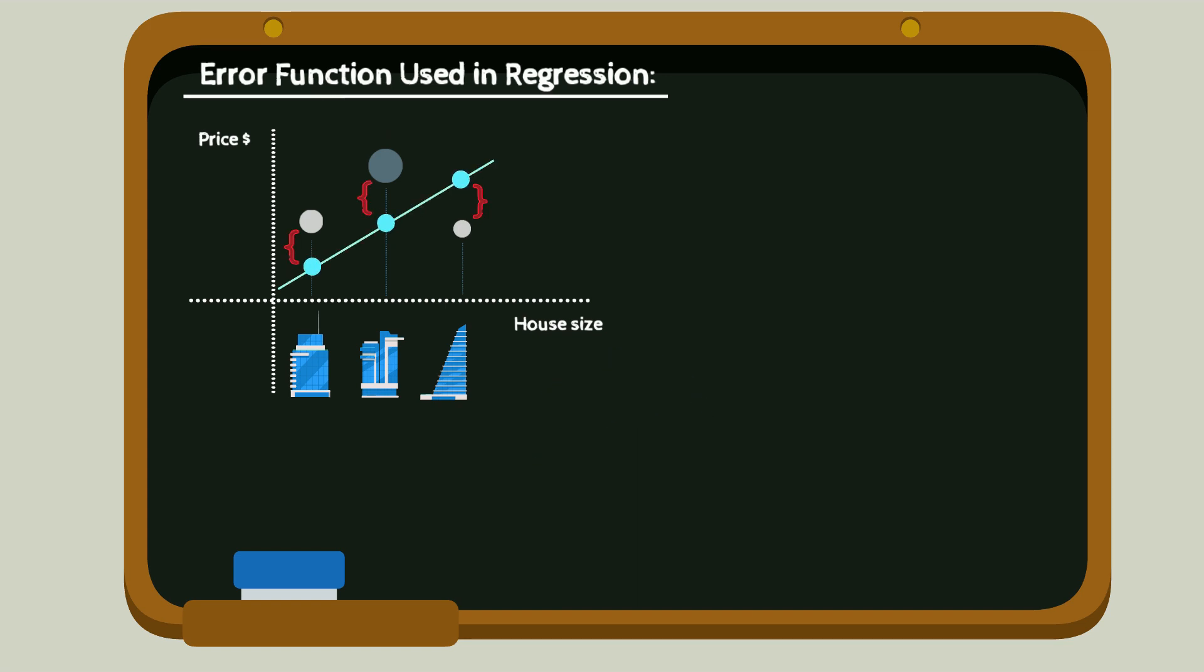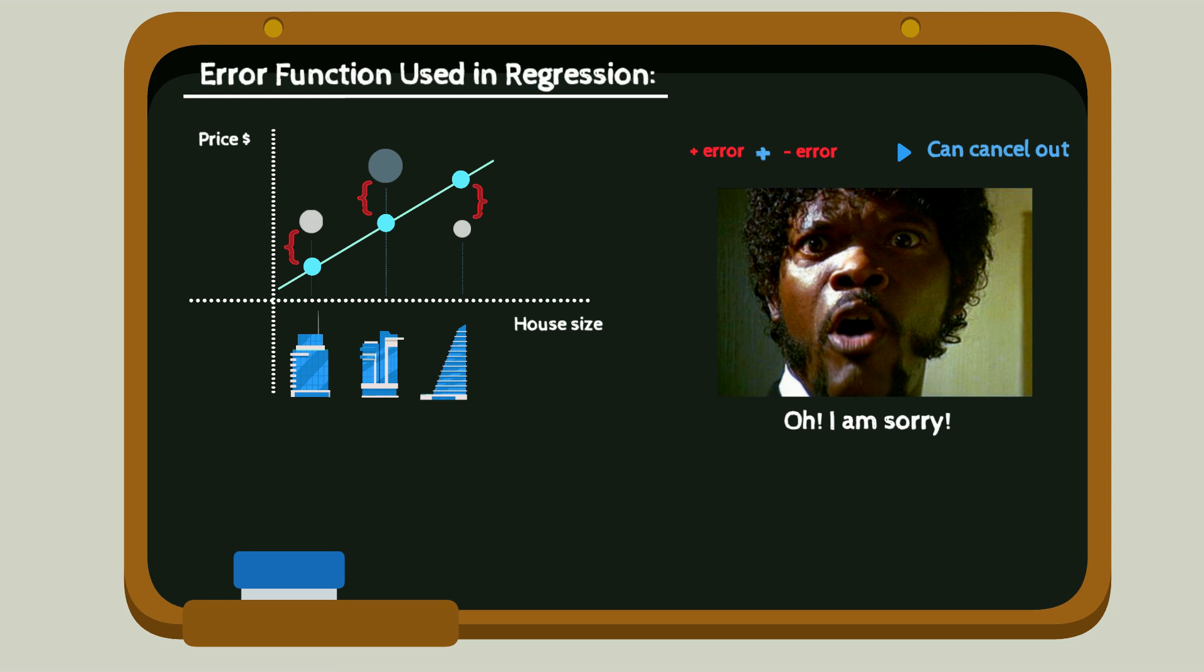Probably, you have some intuition. Maybe we squared them so that when we sum negatives and positives, errors don't cancel out. Right, well, that's not the real reason. Oh, I'm sorry, did I break your concentration? The real reason is probability theory. Yeah, probability theory.